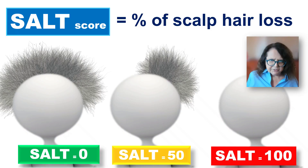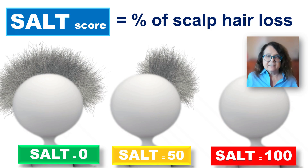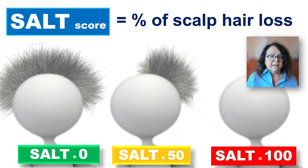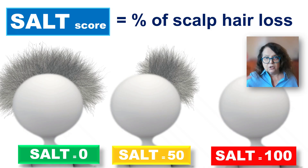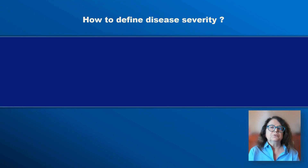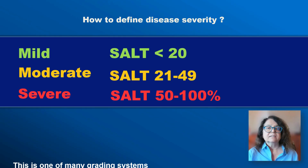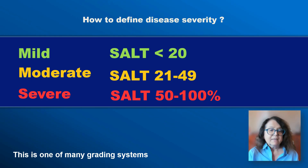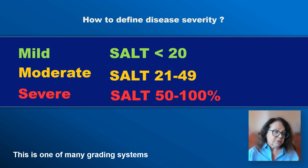Our main parameter is the SALT score, which means the percentage of scalp hair loss. If a patient has all scalp hair, we say it's SALT 0. If the patient has no hair, it will be SALT 100, and every number in between. How do we evaluate disease severity? If the SALT score is below 20, we consider it mild. If the SALT score is between 21 and 49, we consider it moderate. And 50 or more is considered severe.